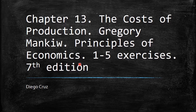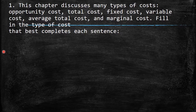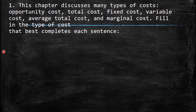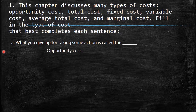We're using Gregory Mankiw's seventh edition. The first question says this chapter discusses many types of costs: opportunity cost, total cost, fixed cost, variable cost, average total cost, and marginal cost. Fill in the type of cost that best completes each sentence.